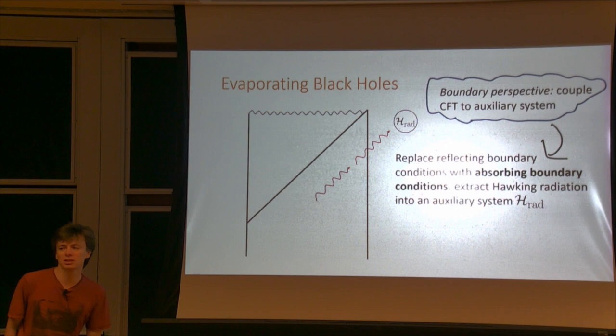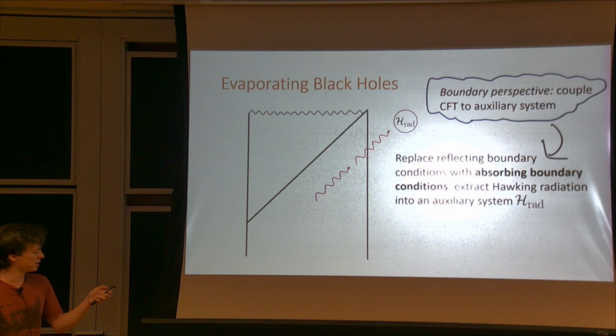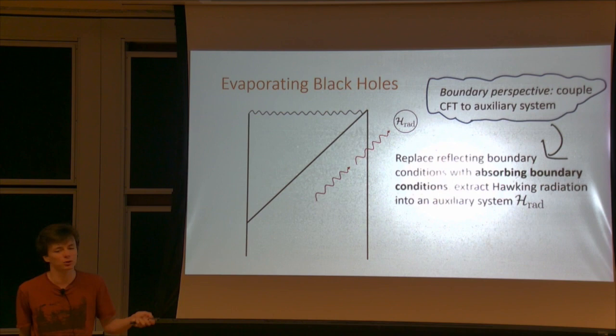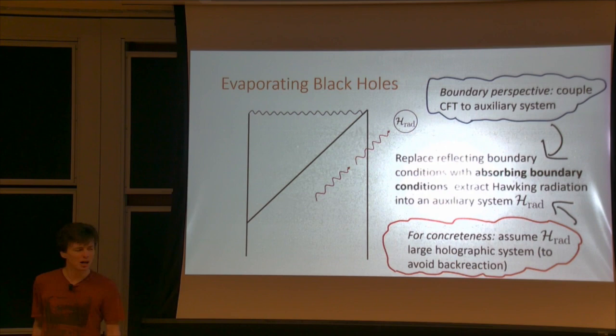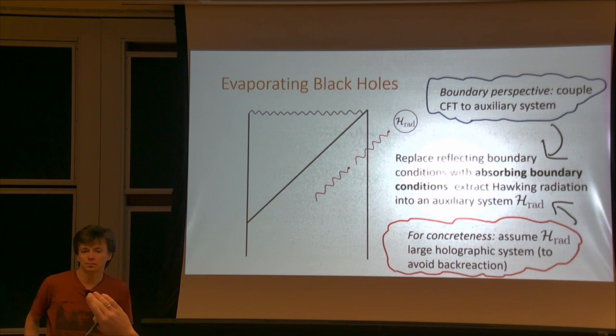From a boundary perspective, this corresponds to coupling our CFT, with some pretty generic coupling, to an auxiliary system HRAD. The fact that it's absorbing boundary conditions — stuff going out but no stuff coming back in — corresponds to the fact that the dynamics of the CFT should follow a Markovian master equation. For concreteness, I'm going to assume that HRAD is itself some very, very large holographic system. So the Hawking radiation is just going to go into this system, and because it's so large, there's going to be no back reaction — just a load of thermal radiation sitting in that bulk.